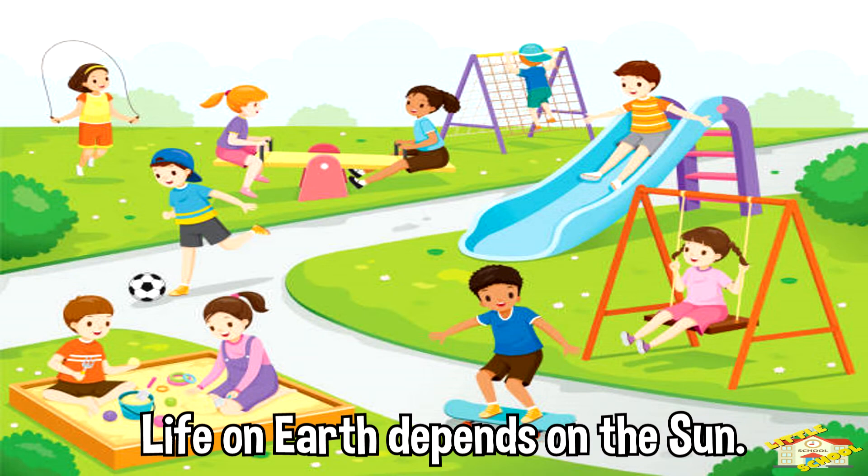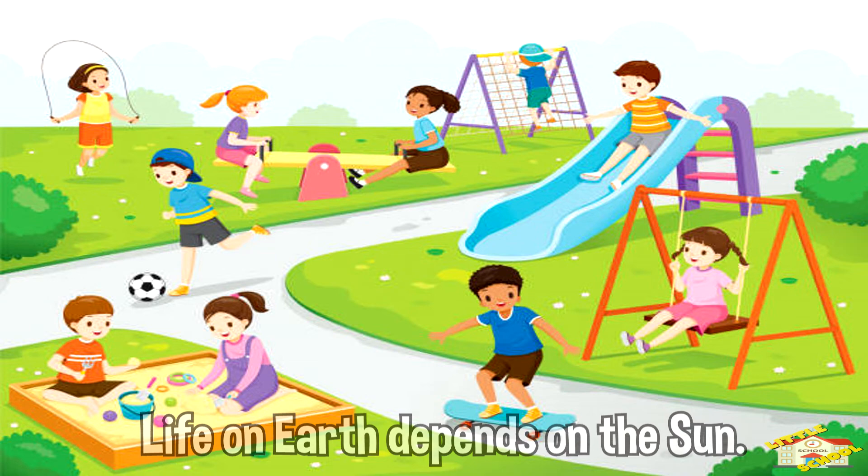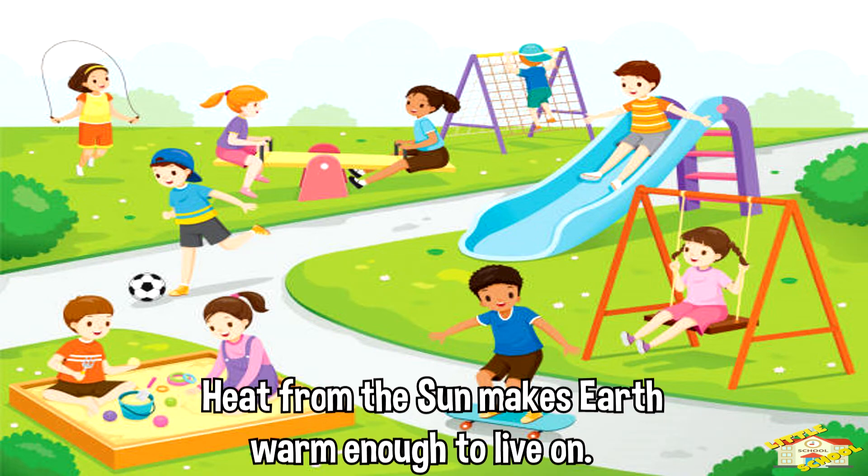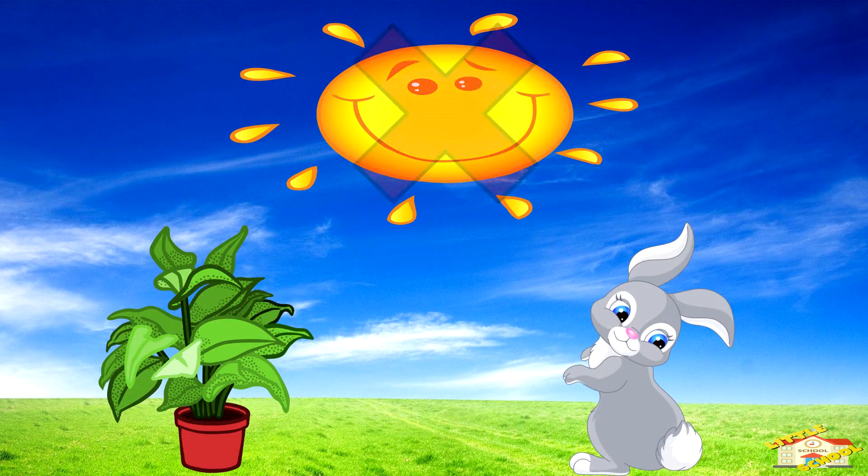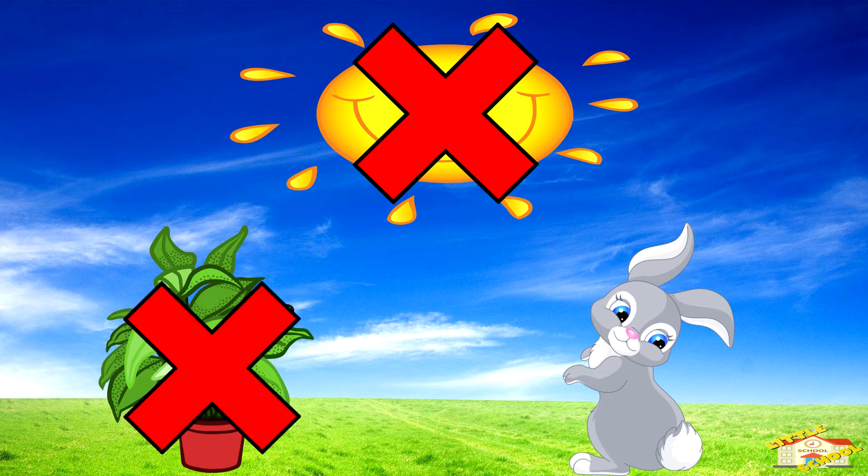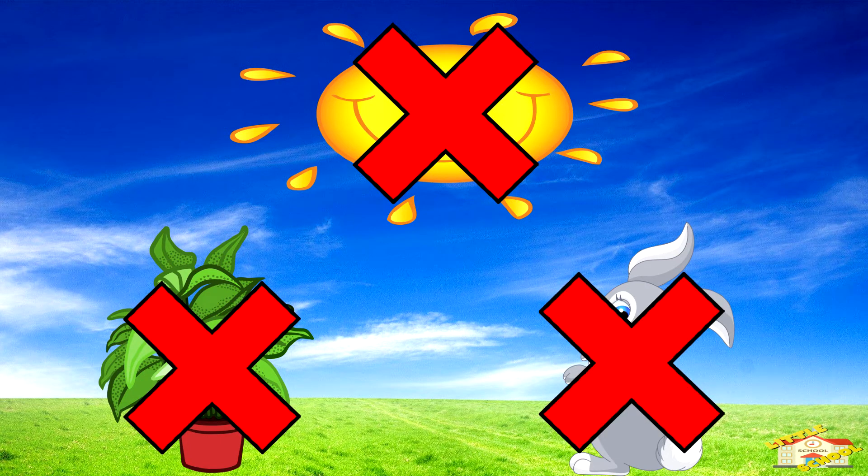Life on Earth depends on the Sun. Heat from the Sun makes Earth warm enough to live on. Without light from the Sun, there would be no plants or animals, therefore no food, and we wouldn't exist.